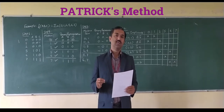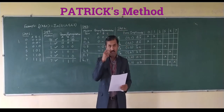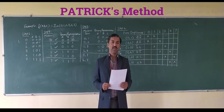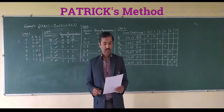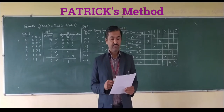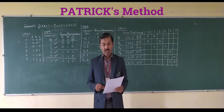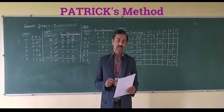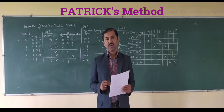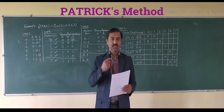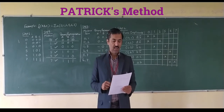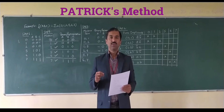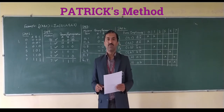When we talk about finding the minimum functions, we have the K-map, we have Boolean algebra, and we have also discussed the Quine-McCluskey method. One of the disadvantages of the Quine-McCluskey method is that when the number of variables increases, the prime implicant chart becomes complicated, making it very difficult to determine the essential prime implicants. So how we can overcome this problem using the Petrick method is what we are going to discuss.